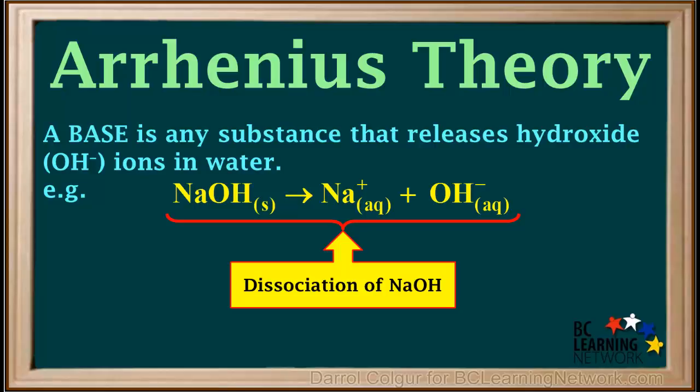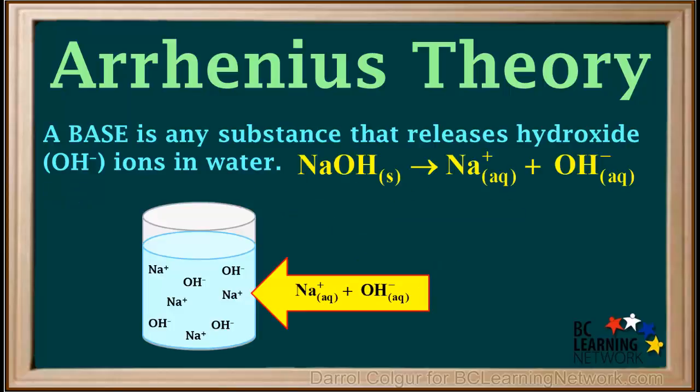The dissociation of NaOH is shown by this equation. NaOH solid gives Na+ aqueous plus OH- aqueous. So according to Arrhenius' theory, an aqueous solution of the base sodium hydroxide could be viewed as free and mobile Na+ and OH- ions surrounded by water molecules.